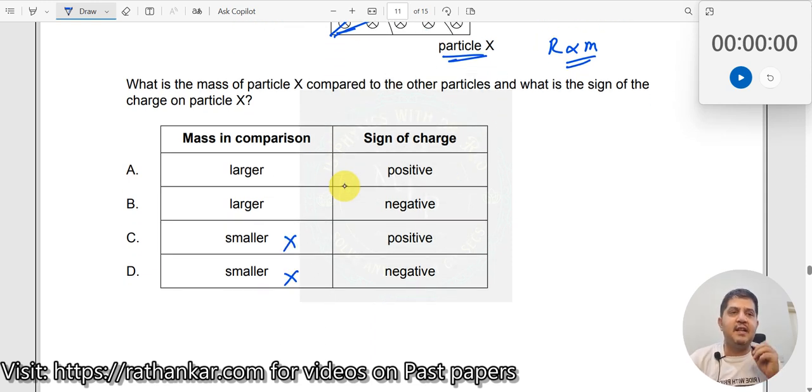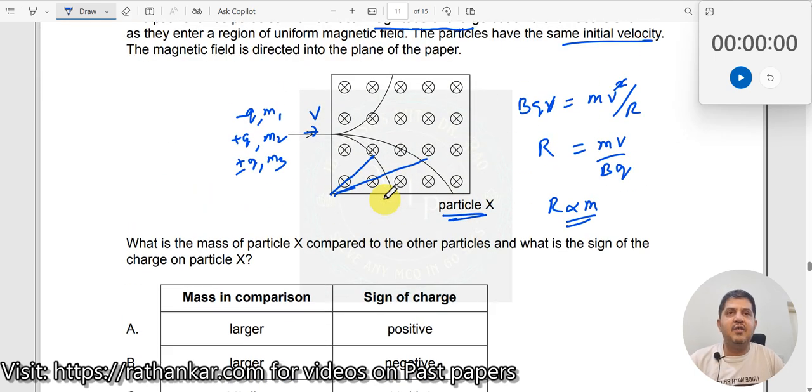Now you need to look for the sign of charge. Now let us use our left hand thumb rule. So use BQ, FBI rule.